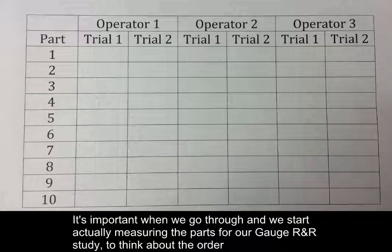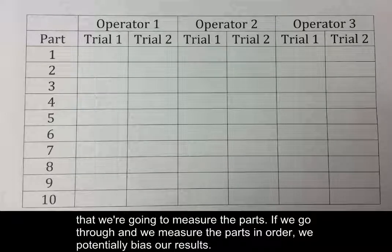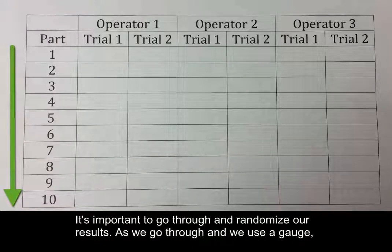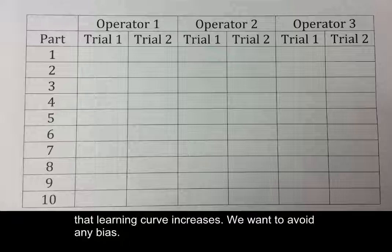It's important when we go through and start actually measuring the parts for a gauge R&R study to think about the order that we're going to measure the parts. If we go through and we measure the parts in order, we potentially bias our results. So it's important to go through and randomize our results. As we go through and use a gauge, that learning curve increases, and so we want to avoid any bias.